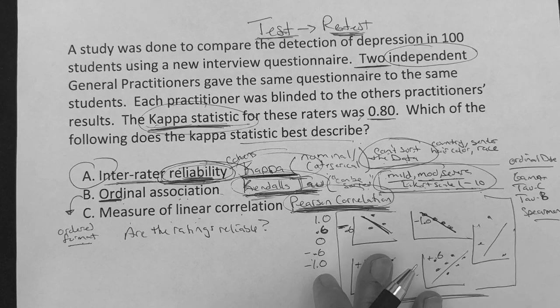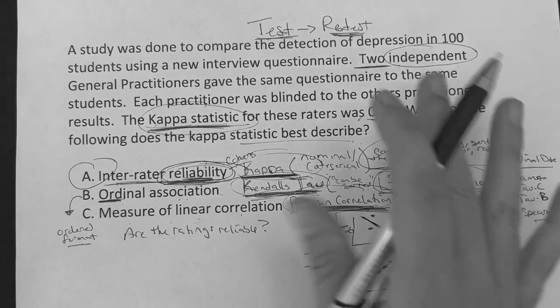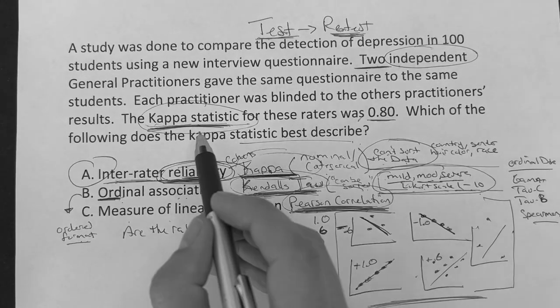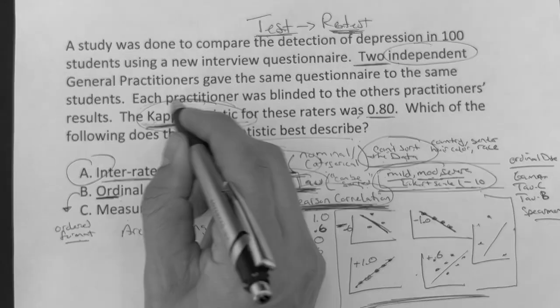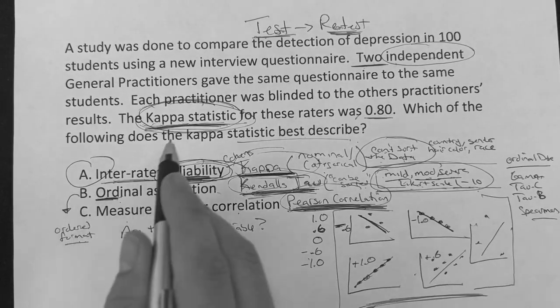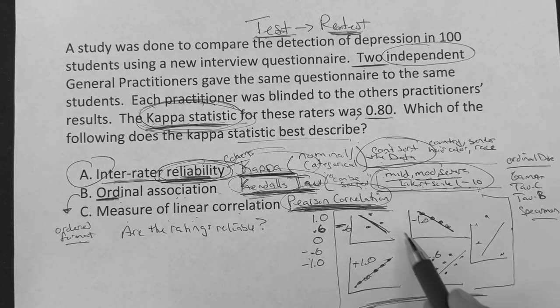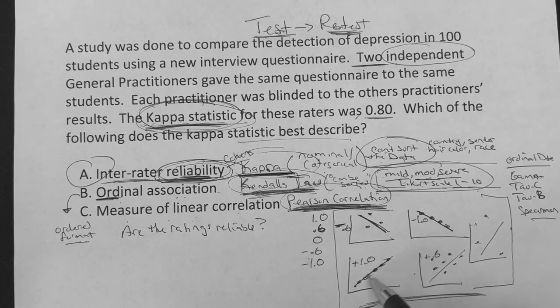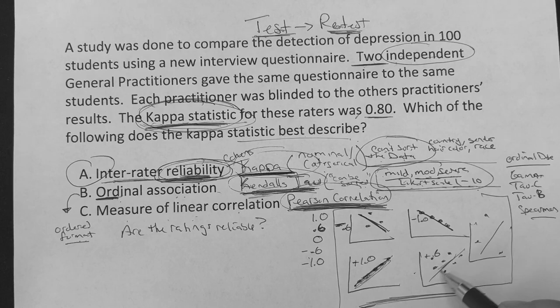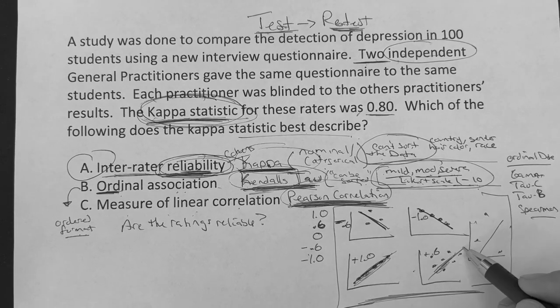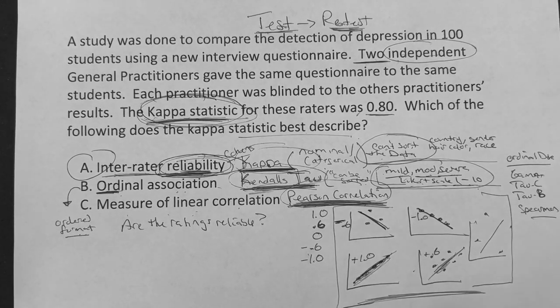So anyways, that's kind of how I do it, guys. Don't get bogged down on this. Again, most of the questions are going to give you this, like it's going to say Kappa or they're going to say the Kendall's Tau. And then if they say the Pearson's correlation coefficient, just know how to make sure there's that it's either tightly correlated, loosely correlated. And if it goes up to the right, it's positive down to the right, it's going to be negative. Hope it's helpful guys.